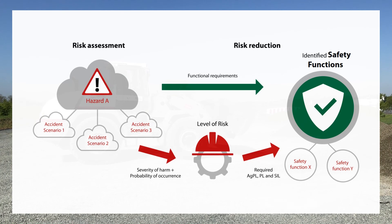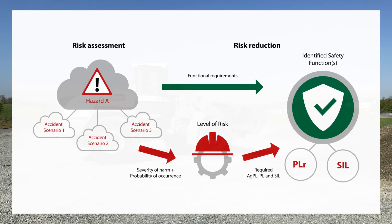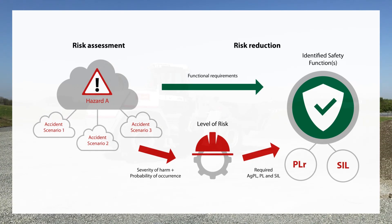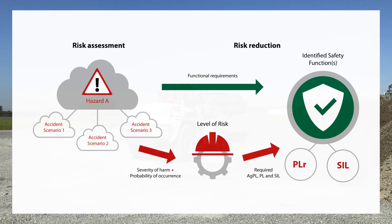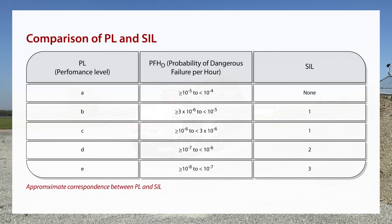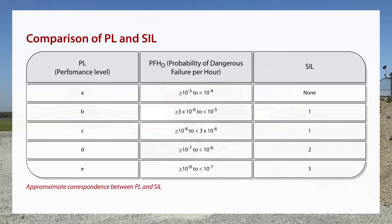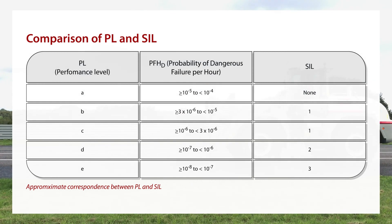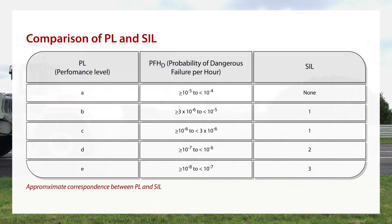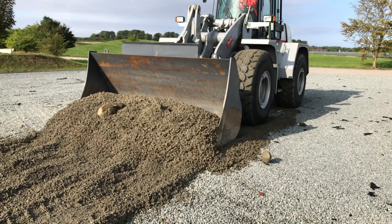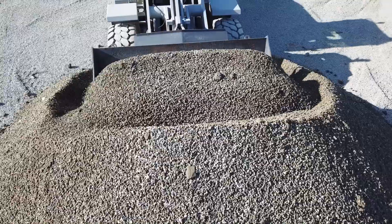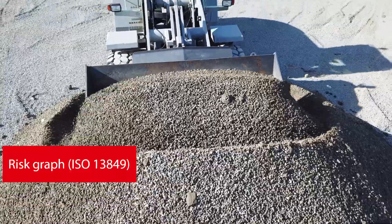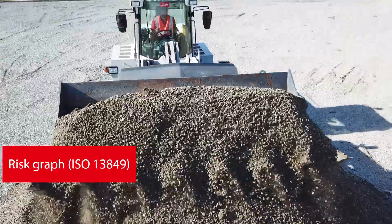Each safety function will have a required performance level or safety integrity level determined by the risk and hazard analysis. The performance level defines the robustness of the safety function. Let's have a look at the following example for our wheel loader. We evaluate the risk of a particular steering function related to the joystick by applying the risk graph from ISO 13849.